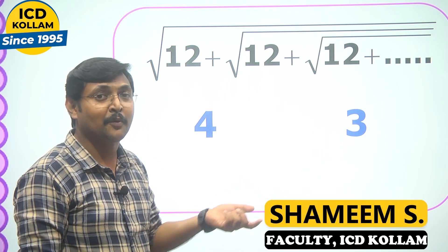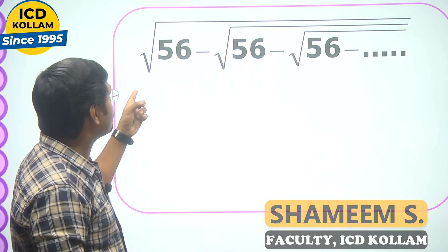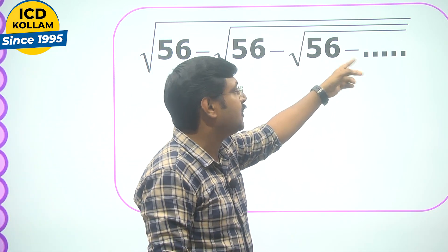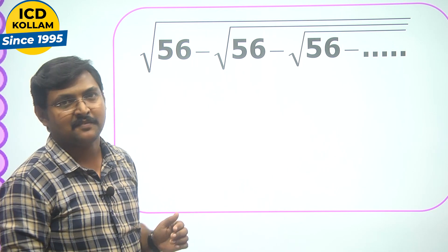So let us try to solve another question. Here goes the next question, square root of 56 minus root of 56 minus root of 56 minus etcetera. The same procedure.